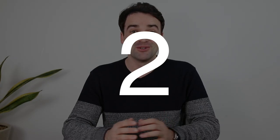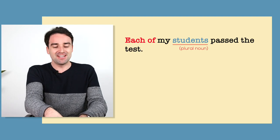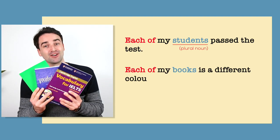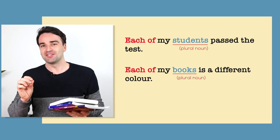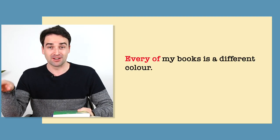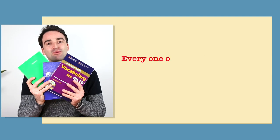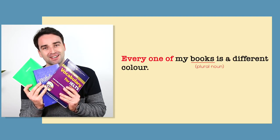Number two: 'each' and 'every' are normally used with singular nouns, but you can use 'each' with plural nouns — however, it must be followed by 'of.' For example: 'Each of my students passed the test.' 'Each of my books is a different color.' But you cannot say 'every of my books is a different color' — that's wrong. Instead, you need to say 'every one of my books is a different color.'